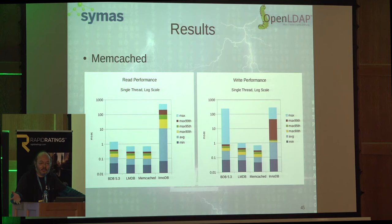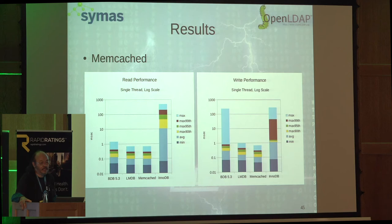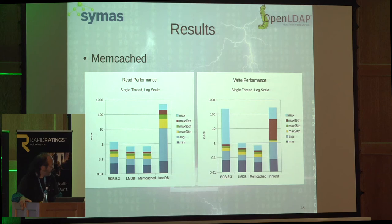Here's Memcache — there's a fork called MemcacheDB written using Berkeley DB, which I've adapted to use LMDB instead. The idea is you now have a cache that survives a reboot — a persistent cache. Interestingly, Memcache with LMDB is faster than Memcache with RAM when you have more than one thread. The reason is that with LMDB, readers take no locks, whereas Memcache's in-memory data structure still takes locks. As the number of threads increases, Memcache with RAM slows down while LMDB doesn't.